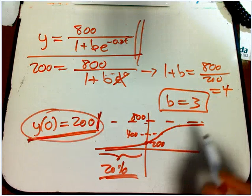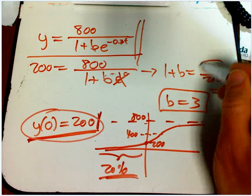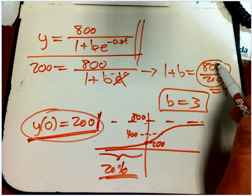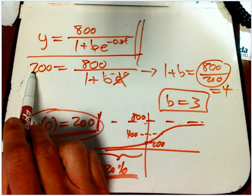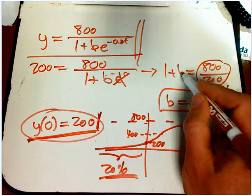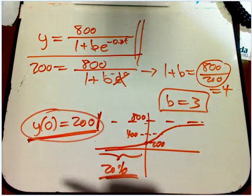So notice it has to do with the ratio of, the B is really, take the ratio of the carrying capacity divided by your T equals 0 amount and subtract 1. It seems kind of random, but that's just the way the B works.